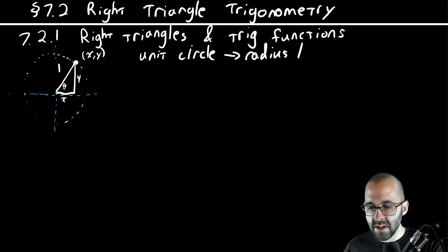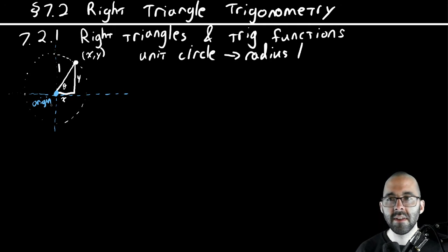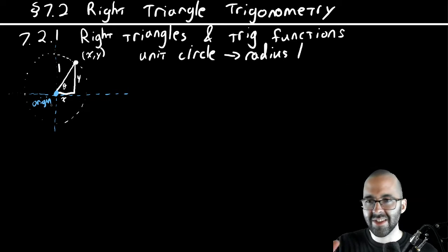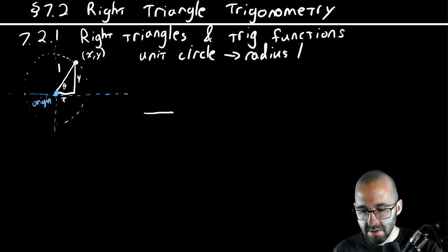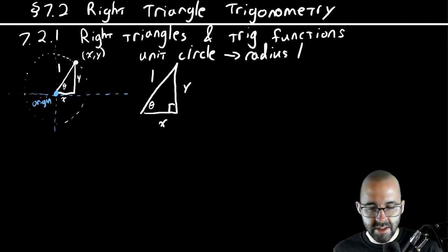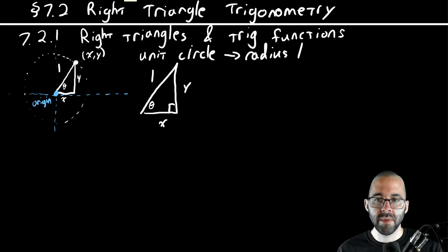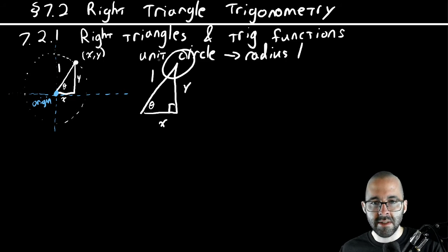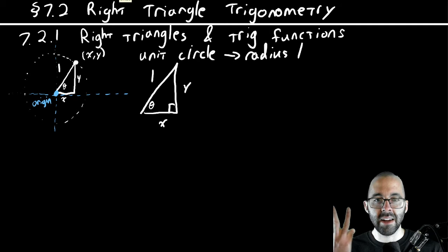If this angle is in standard form — which it is — then this right here is the origin. This is the situation we're going to be dealing with a lot. Let me draw the triangle a little bigger: this is x, this is y, this is theta, and this is the hypotenuse, which is one. We always pick an angle in question, and theta is our angle in question because it's in standard form. Relative to theta, there are three sides and we have names for them.